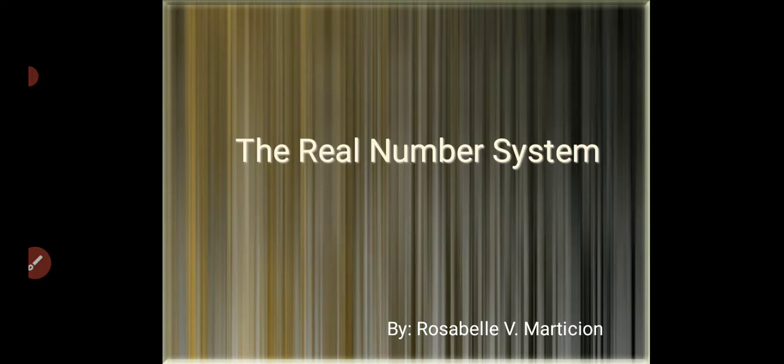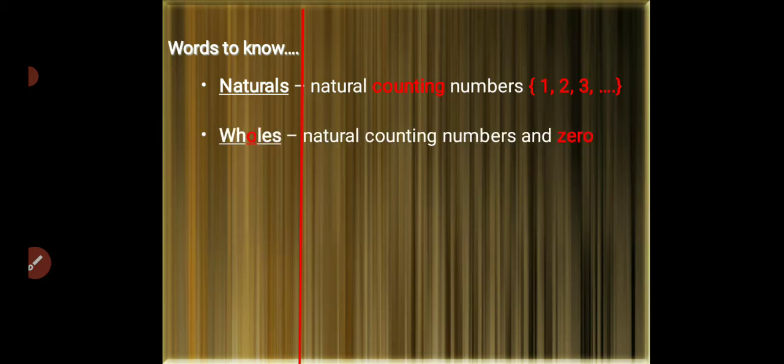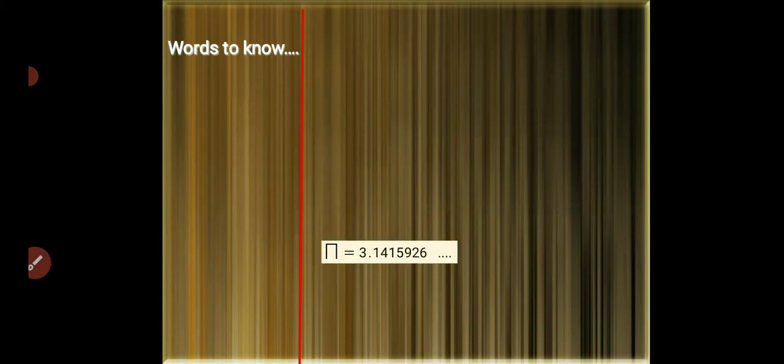We'll discuss the real number system. Words to know: Naturals are natural counting numbers 1, 2, 3, and so on. Whole numbers are natural counting numbers and zero: 0, 1, 2, 3, and so on. Integers are positive or negative natural numbers or zero: negative 3, negative 1, 0, 1, 2, 3, and so on.